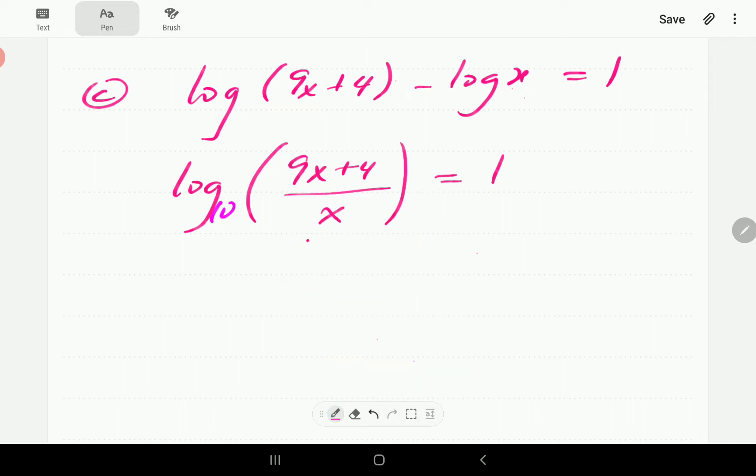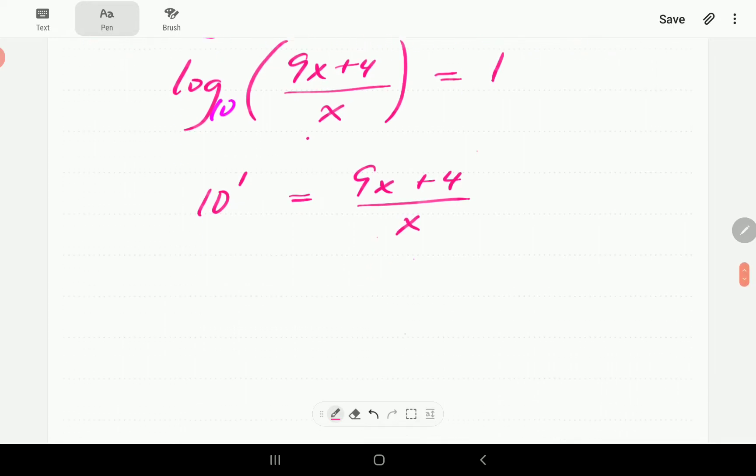So what this equation is telling us is that 10 to the power of 1 is 9x plus 4 all over x.